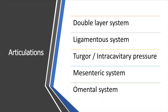Turgor is how dry or wet you are. In medicine we'd say someone is wet or dry, meaning they're either not retaining fluids or retaining too much fluid — this is going to affect intracavitary pressure and normal motion. Other big things responsible for movement in the abdomen are the mesenteric system, which suspends many things, and the omental system, which provides lubrication and has other functions including energy storage and some protection against infections.